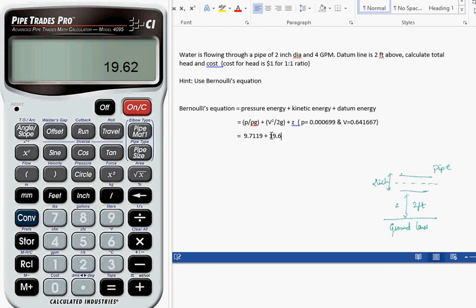Let me add over here 19.62 plus datum energy is given. It's two feet above from the ground level. So by adding all these three values, 2 plus 19.62, which is the kinetic energy, plus the pressure energy is 9.719. So the total head is 31.35289.